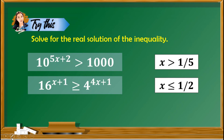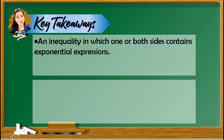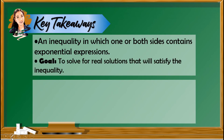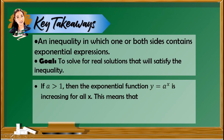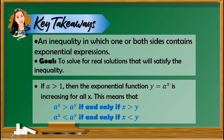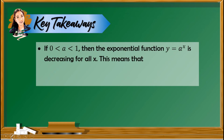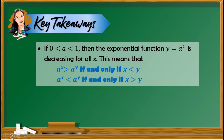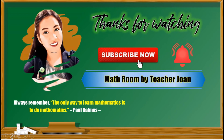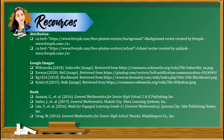Did you get this right? If yes, great job! What do you need to take note about this lesson? An inequality in which one or both sides contains exponential expressions is called an exponential inequality, and the goal is to solve for the real solutions that will satisfy the given inequality. If a is greater than 1, the exponential function is increasing and we simply follow the given inequality symbol. If a is greater than 0 but less than 1, we need to reverse or change the inequality symbol. This is the end of our discussion. I hope you have learned a lot about exponential inequalities. Thanks for watching. Please don't forget to like and comment on this video. Bye everyone — see you on our next video!